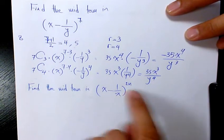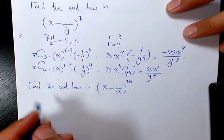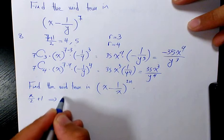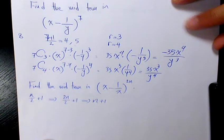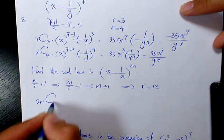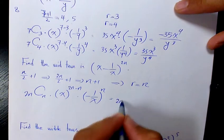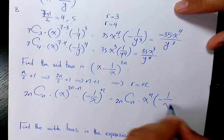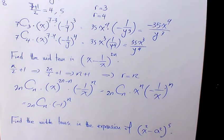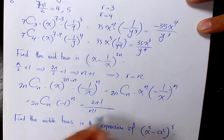Next, find the middle term in (x − 1/x) to the power of 2n. Since 2n is an even number, the total number of terms is 2n + 1, which is odd, so the middle term is the (n+1)th term, meaning r = n. That gives 2nCn · x^(2n−n) · (−1/x)^n = 2nCn · x^n · (−1/x^n). The x^n terms cancel, leaving 2nCn · (−1)^n, or equivalently (2n)! / (n!)² · (−1)^n.